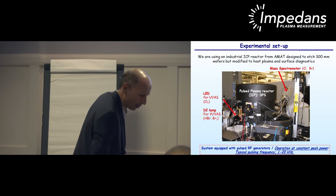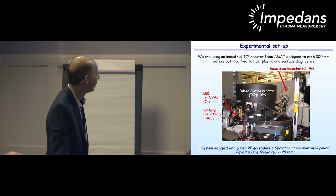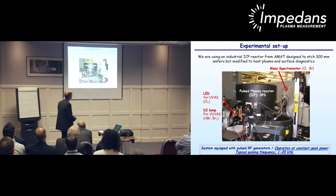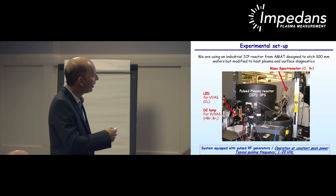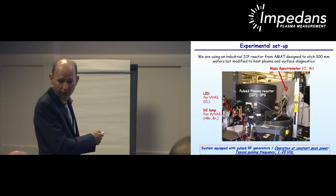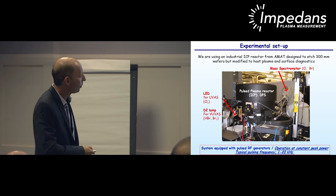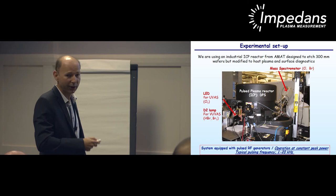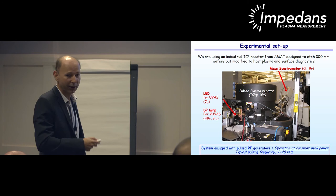Now let's look at some results obtained with all these diagnostics. We are using an industrial ICP reactor from Applied Materials designed to etch 300 mm wafers, modified by our Applied Materials colleagues to host plasma and surface diagnostics. Located in a clean room, you can see the LED light source used for UV absorption spectroscopy and the mass spectrometer. This system is equipped with pulsed RF generators that work at constant peak power, which is important to understand the results. The typical pulsing frequency used in industry for etching applications is about 1 to 20 kHz.